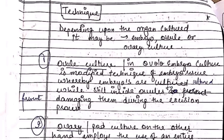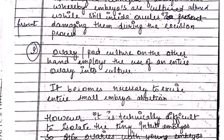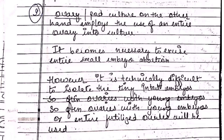In the technique for embryo rescue culture, embryos are removed aseptically from the surrounding tissues and are well protected under careful procedures. Depending on the organ cultured, it may be referred to as ovary culture or ovule culture. Ovule embryo culture is a modified technique where embryos are cultured while still inside their ovules to prevent damage. Ovary or pod culture employs the use of the entire ovary in culture — the ovary is surface sterilized and inserted into the nutrient medium.